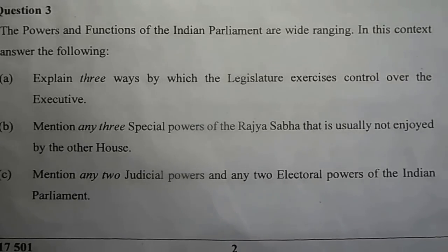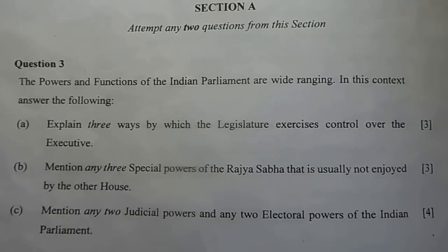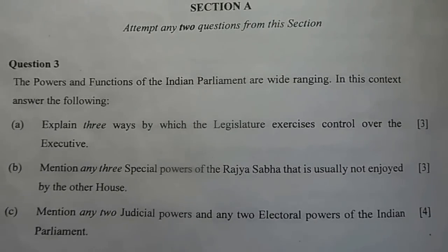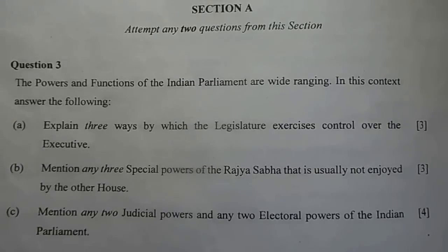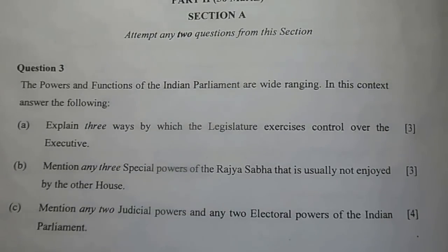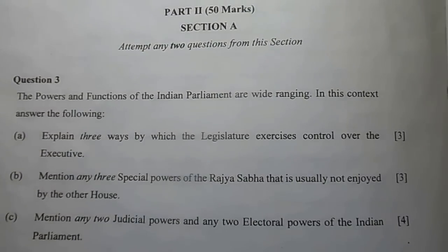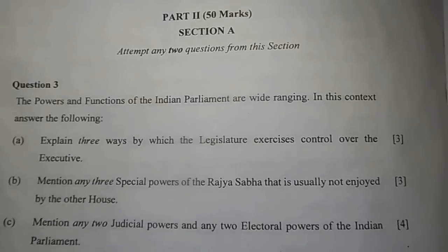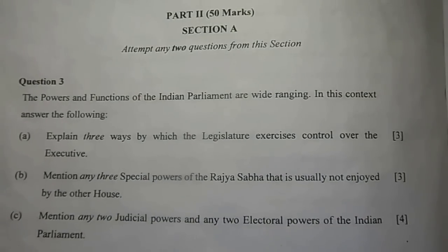C. Mention any two judicial powers and any two electoral powers of the union parliament. Two judicial powers: Number 1, the president can be removed from office by impeachment. Number 2, a judge of the Supreme Court or the High Court cannot be removed by the president except on a joint address by both houses. Two electoral powers: The Indian parliament elects the President of India and elects the Vice President of India.